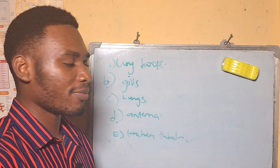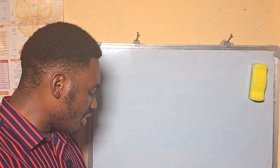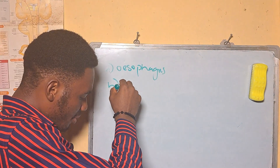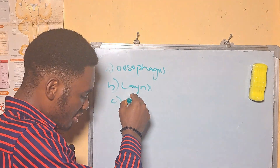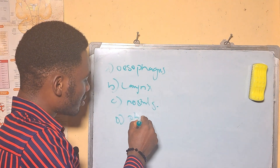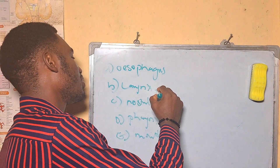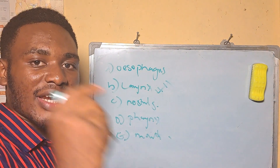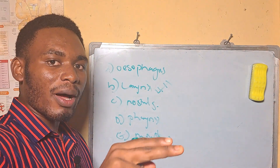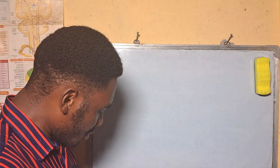The glottis is the opening which leads to — A: oesophagus, B: larynx, C: nostrils, D: pharynx, E: mouth. The answer is B, larynx — this is the upper part of the trachea, the windpipe. The epiglottis protects this upper part to avoid food and bacteria from entering the windpipe.